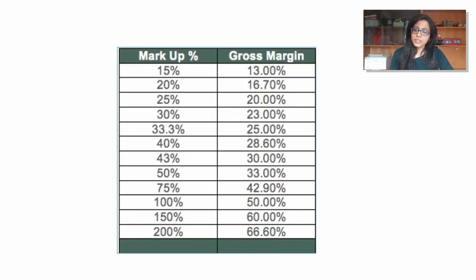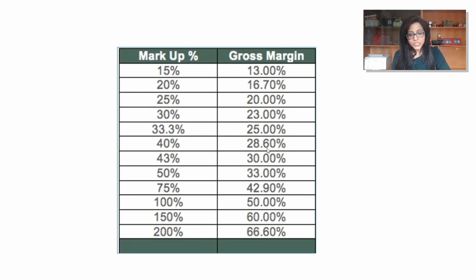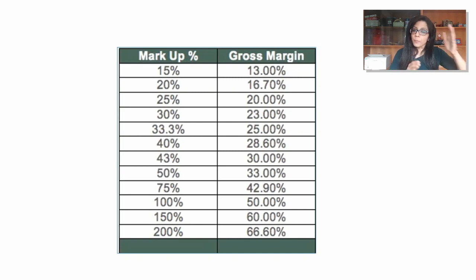Here's a table showing how markup and margin vary. At 15% markup you get 13% margin; 20% markup gives 16.7% margin. Markup always shows higher than margin. At 40% markup it's 28.6% margin; 50% markup gives 33% margin; 100% markup — as we saw — is only 50% margin. At 200% markup it's 66% margin. As the markup increases, the gap between markup and margin grows hugely.